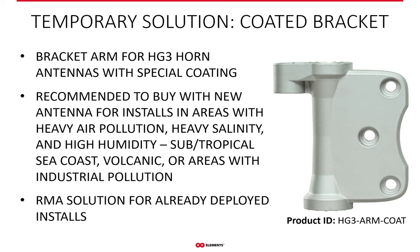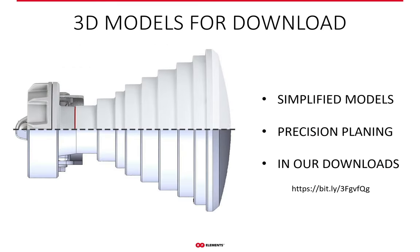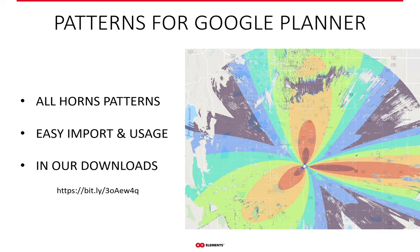We also recommend getting this bracket arm for symmetrical horn installs that you know will be deployed in environmentally challenging areas before you even go there. Contact your local distributors for more information. On our webpage, you can download simplified 3D models of our antennas to help with precise planning of your deployments on site — much easier than modeling the antennas yourself. You can also download radiation patterns of our antennas for the Google Planner tool, for simpler and easier planning of your deployments.